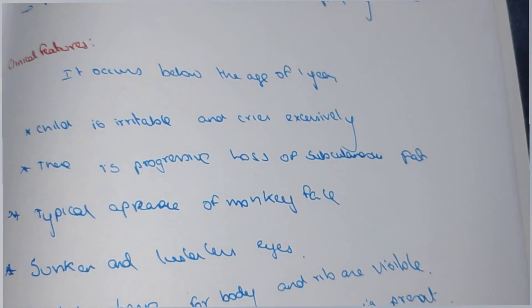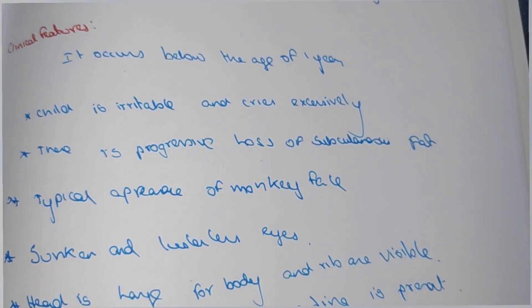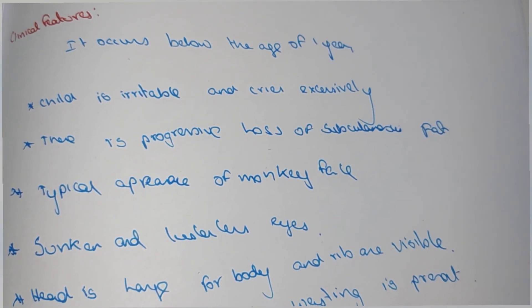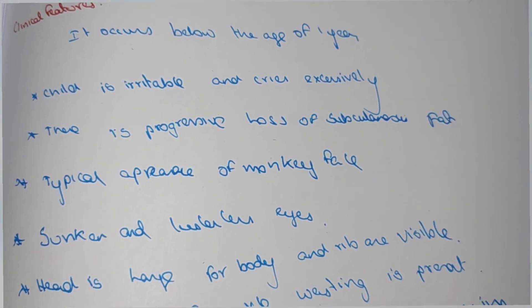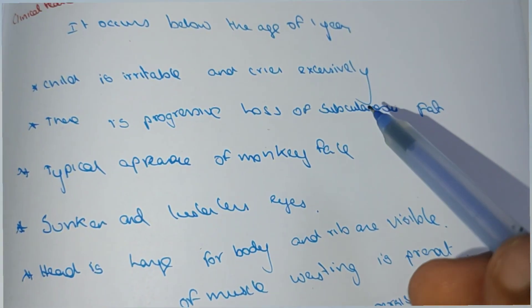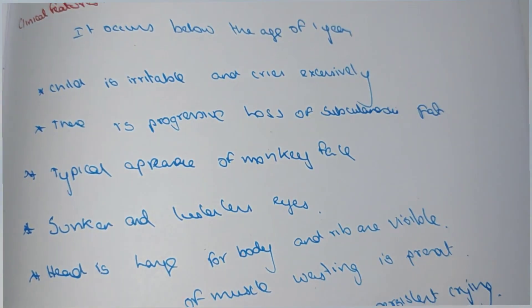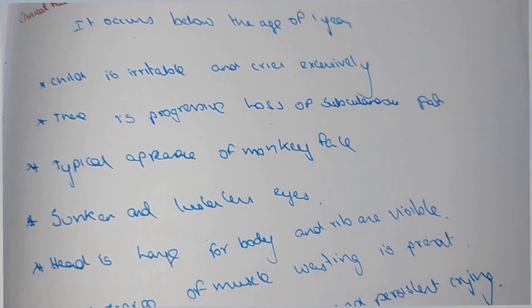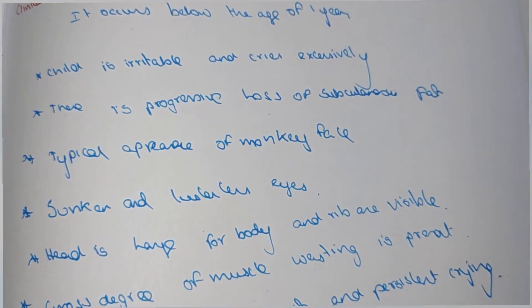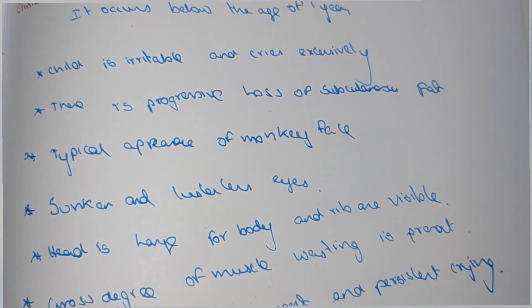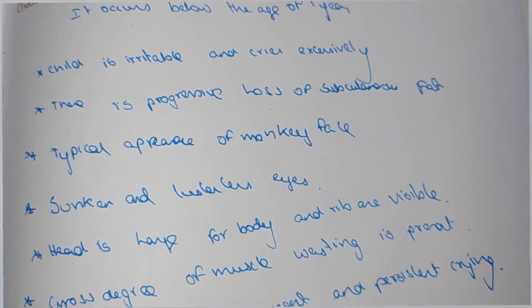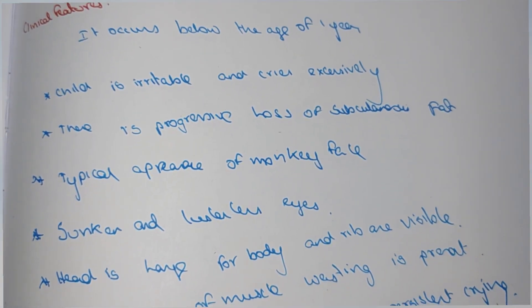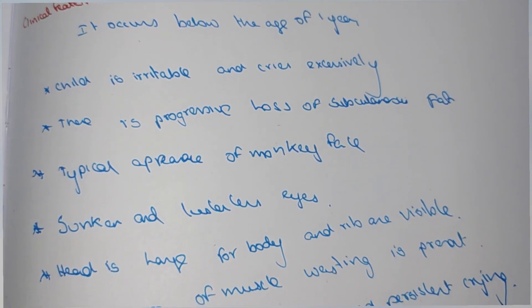Marasmus occurs below the age of one year. The child is irritable and cries excessively. There is progressive loss of subcutaneous fat, with a typical appearance of monkey face.